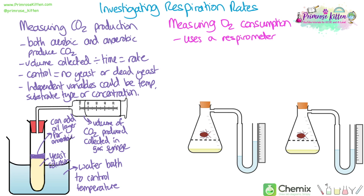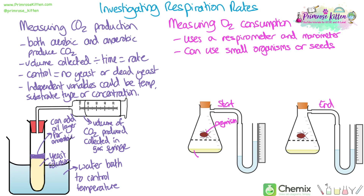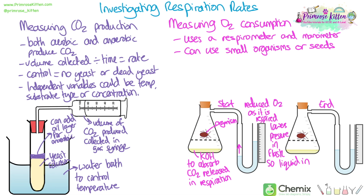Another way measures oxygen consumption using a respirometer and a manometer. This method can use small organisms such as insects or seeds. The organism is inside a conical flask suspended above some potassium hydroxide, which absorbs any carbon dioxide released in respiration. The liquid in the manometer moves upwards towards the flask because oxygen is being used up, lowering the pressure inside the flask. You can record this movement on the ruler of the manometer, and if you know the diameter of the tube you can use this to calculate volume.